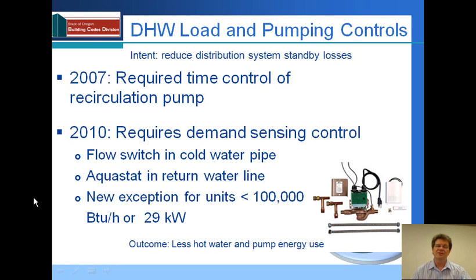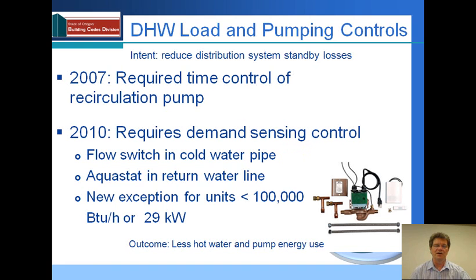The newer controls that are now available are required in the new code language. We look for a flow switch in the cold water pipe. This flow switch should basically turn that pump off unless we sense a demand for hot water. And then once that demand for hot water occurs, the pump will come on delivering water quickly to the person who needs it.